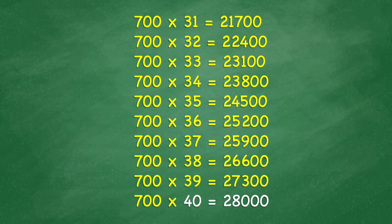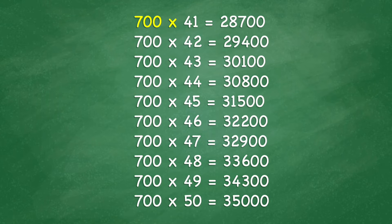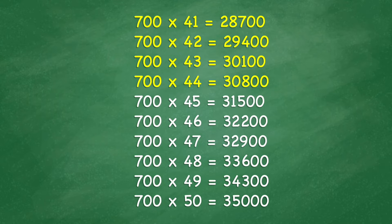700 times 40 equals 28,000. 700 times 41 equals 28,700. 700 times 42 equals 29,400. 700 times 43 equals 30,100. 700 times 44 equals 30,800. 700 times 45 equals 31,500. 700 times 46 equals 32,200. 700 times 47 equals 32,900.